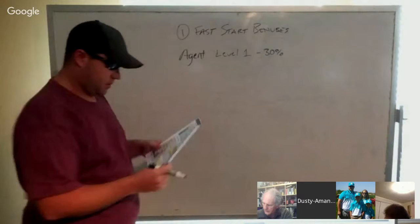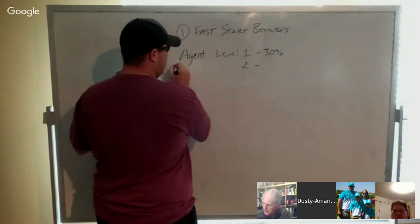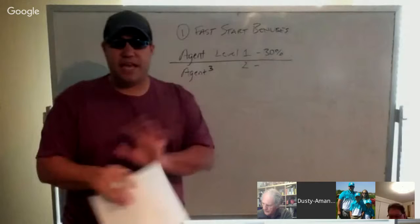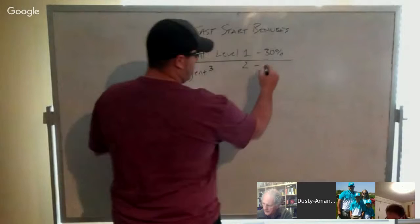On level two, I'm going to draw a line here. On level two, you have to be an agent three. So what an agent three is, is any three personally enrolled agents qualify you for these overrides. So you get 10% on the second level.